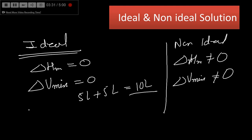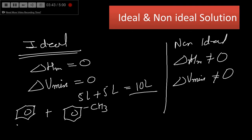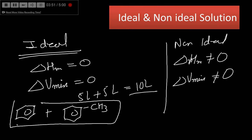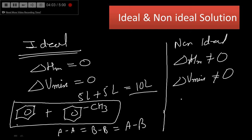As an example of an ideal solution: if we add benzene into toluene, we get an ideal solution. There is not much interaction between the molecules of benzene, and not much interaction between the molecules of toluene — both are non-polar. So when we mix them, there won't be much new interaction between benzene and toluene, meaning A-A is approximately equal to B-B, which is approximately equal to A-B.